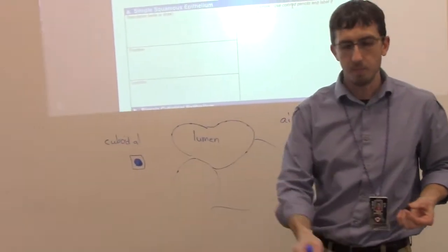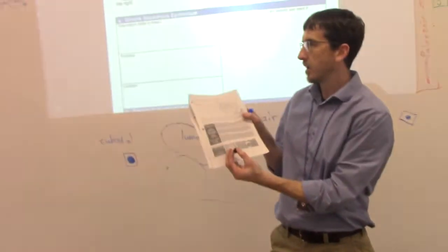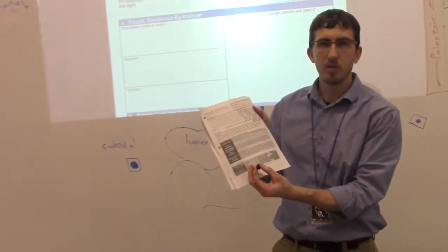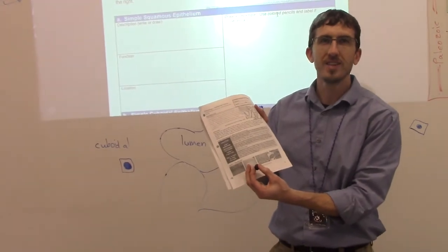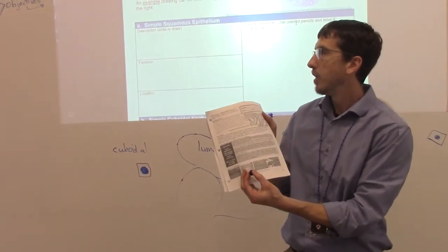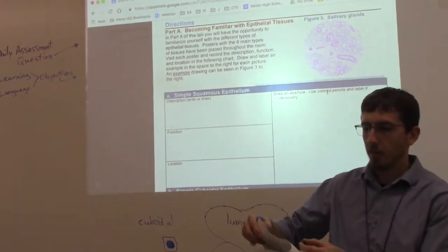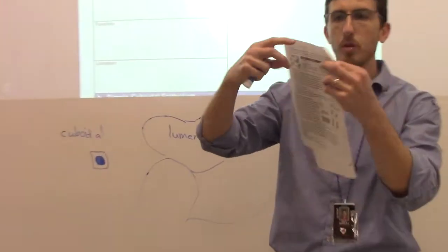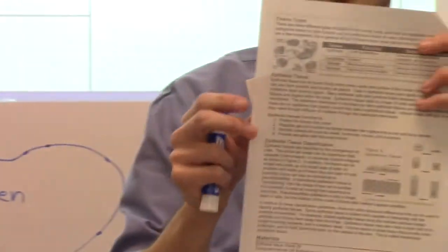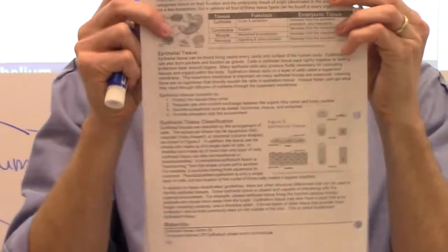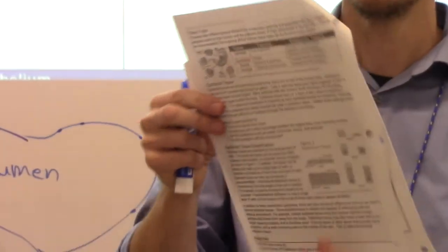So, as you're working through this packet, the warm-up, as you'll see on the slide, is to highlight, first of all, the answer to that daily assessment question you'll see at the end. But as you flip through the packet, you'll see this is about tissues. There's different kinds: epithelial, connective, muscle, and nervous tissue.